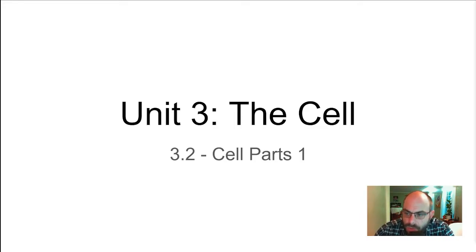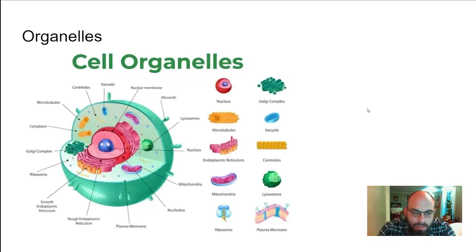This video is 3.2 Cell Parts Part One. There were so many cell parts we couldn't fit them all into one part, so we need to divide it into two. The first thing we're going to talk about are called organelles. Organelles are specialized structures inside the cells that perform special functions, like lysosomes and mitochondria. Prokaryotic cells don't have much of this—they have ribosomes and that's pretty much it.